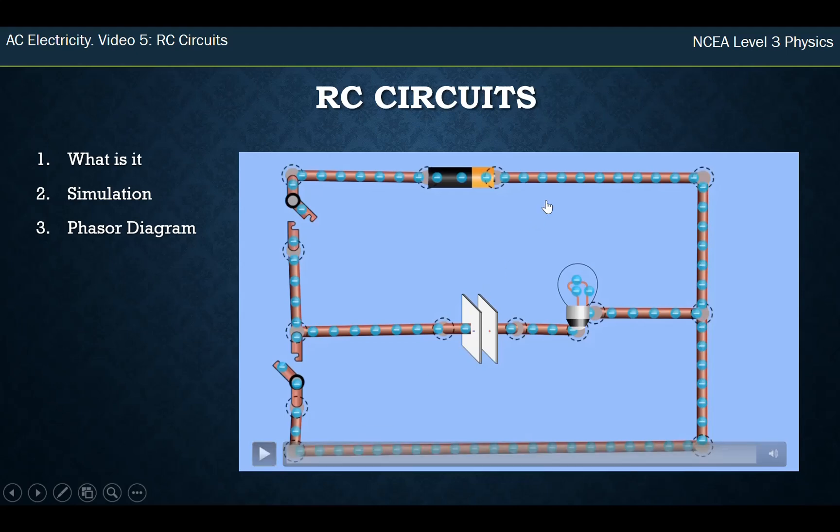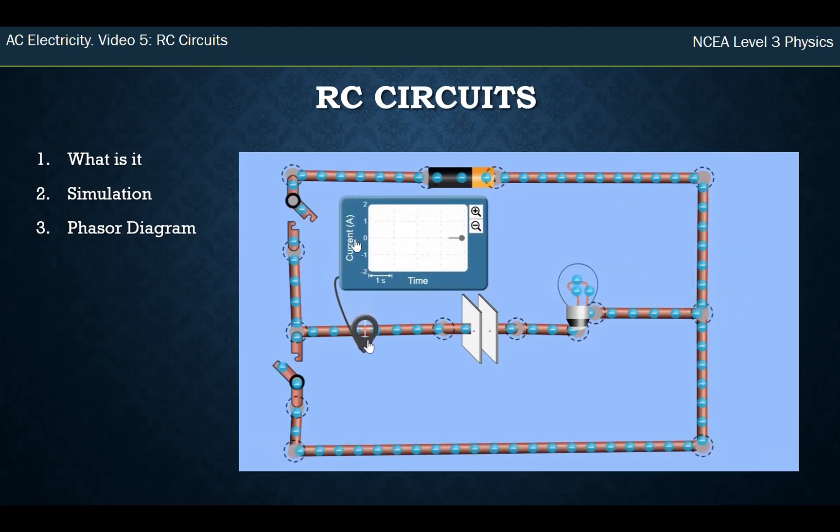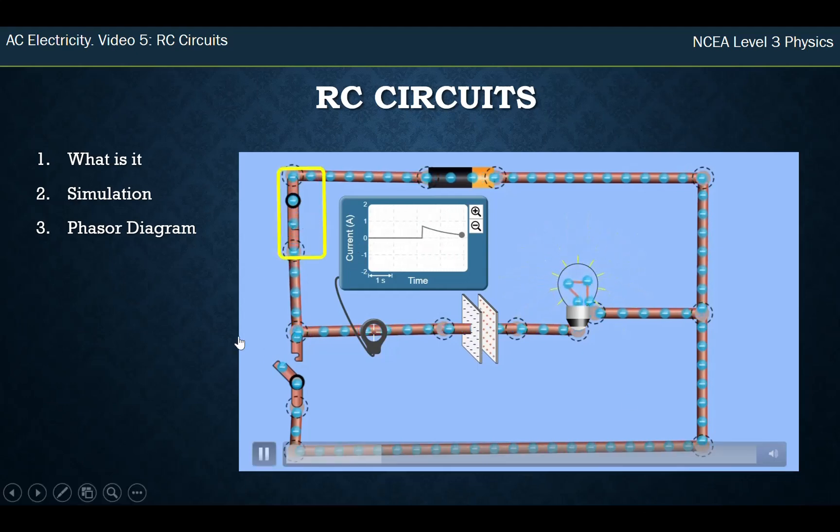Back before we went to AC, when we were just looking at a DC circuit, we had our circuit set up with a capacitor and a light bulb, which is our resistor. In that circuit, we could measure the current, and when we turn this on, we'll see that the current varies over time. This is with just a DC circuit, so the current's going in one direction, but it varies over time because as the capacitor gets more and more charged, it makes it harder for current to flow. As it gets more electrons on one of the plates, it's harder to squeeze more electrons on the plate.